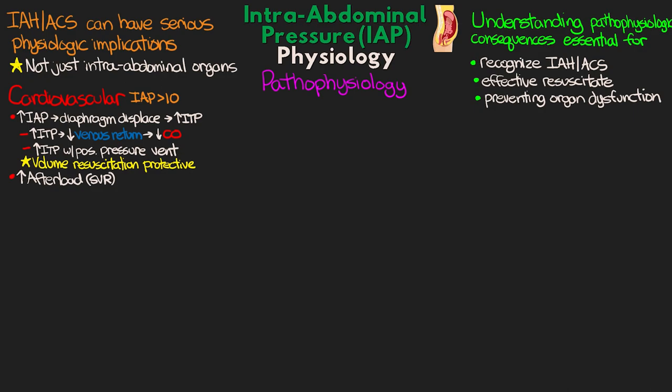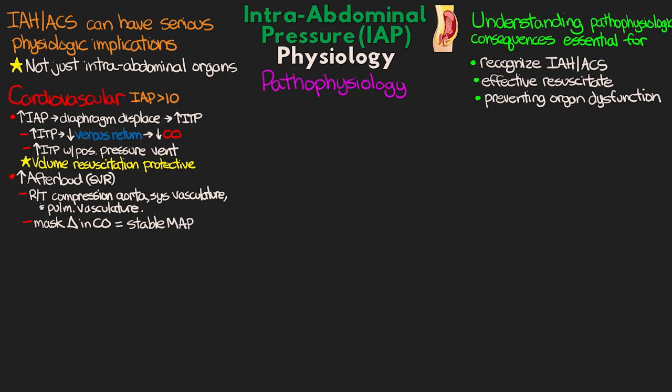In these patients, afterload or SVR is also going to be elevated, due to compression of the aorta, systemic vasculature, as well as pulmonary vasculature from that intra-thoracic pressure. This elevated afterload can actually mask changes in cardiac output, as the elevated SVR can overcome the decreased venous return, keeping MAP relatively stable in less severe cases of intra-abdominal hypertension.